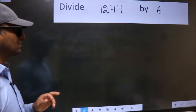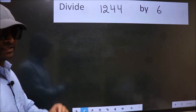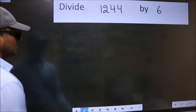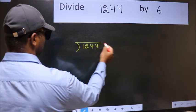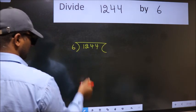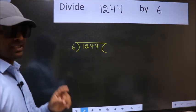Divide 1244 by 6. To do this division, we should frame it in this way. 1244 here, 6 here. This is your step 1.